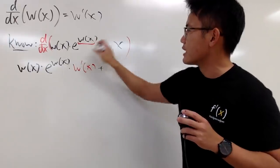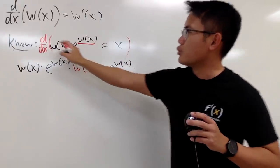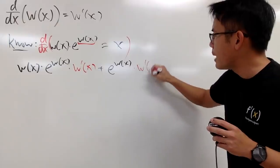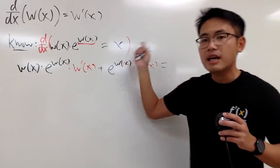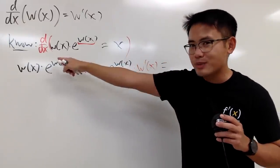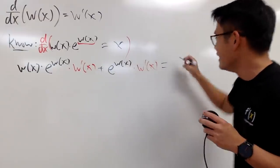And then we add this with the second function, which is e to the W of x, and then we multiply by the derivative of first, which is, once again, W prime of x. And then, as you can see on the right-hand side, differentiating x with respect to x, you get 1. I told you right here already, right? So this is equal to 1.